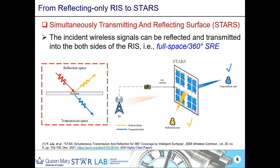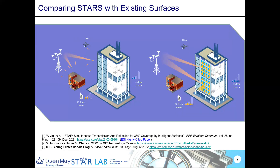The basic concept is clear and tidy. You might argue that buildings and windows already have some reflection or transmission — yes, but we cannot focus the signal to a specific point. With STARS, we can focus the beam to outdoor or indoor users for outdoor sensing, indoor communication, or outdoor communication and indoor sensing. This is what sets STARS apart from existing surfaces.